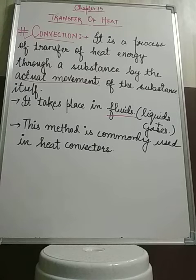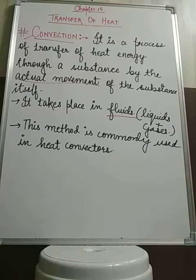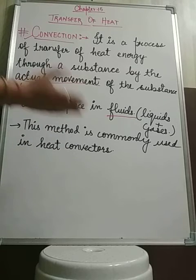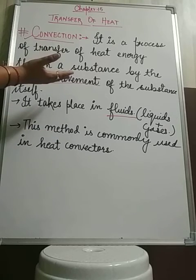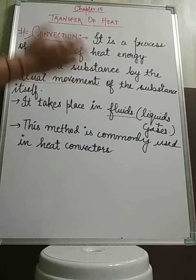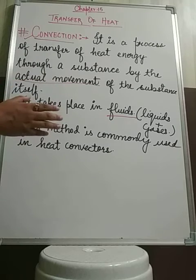How does convection take place? Whenever you heat a liquid or a gas, it becomes lighter in weight. Once it becomes lighter, it rises up. The liquid or gas starts to rise up, whereas the colder liquid or gas which was above starts to move down, as it is heavier. This process continues until the complete liquid or gas attains the same temperature.